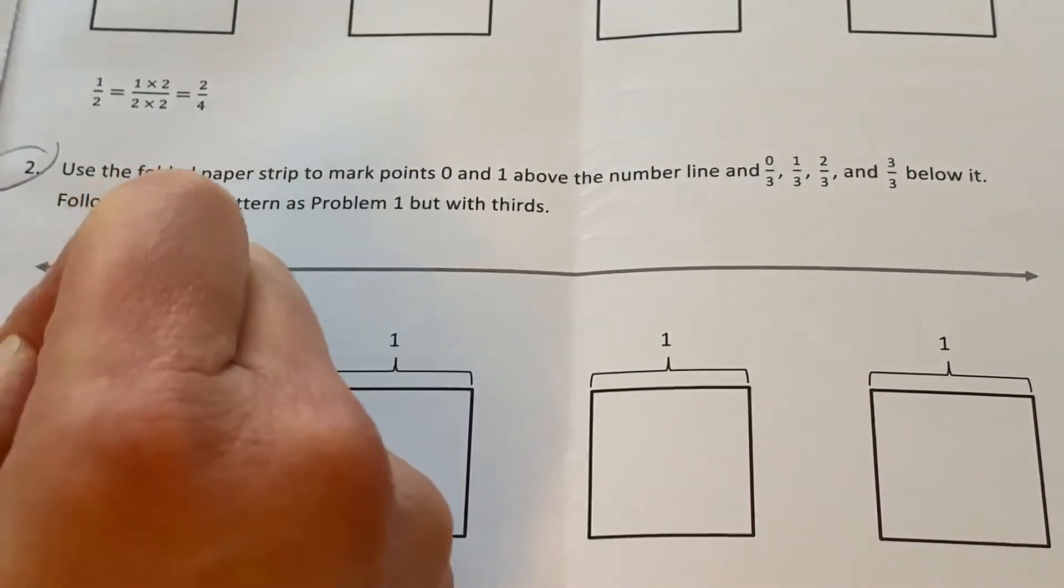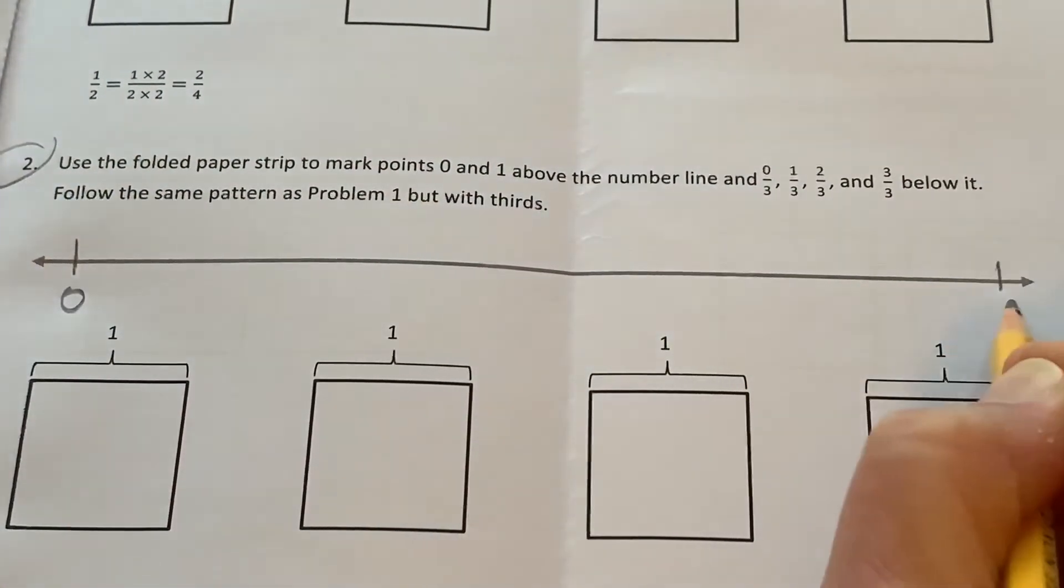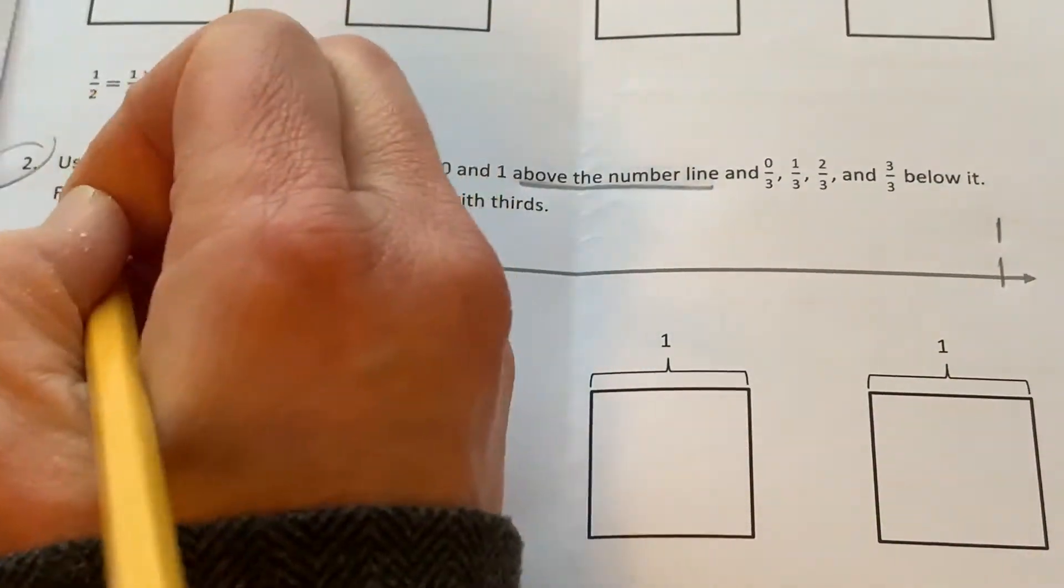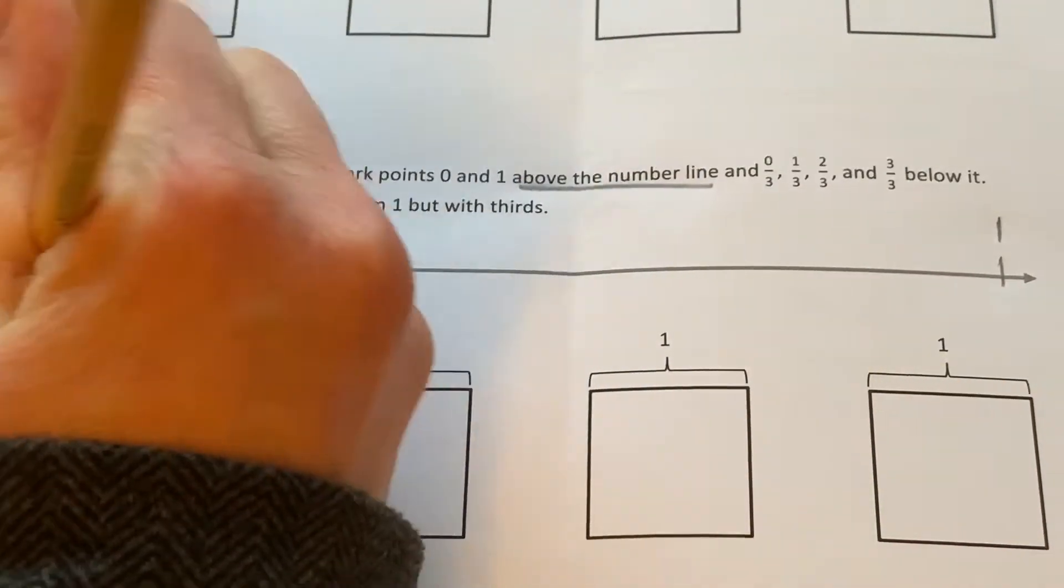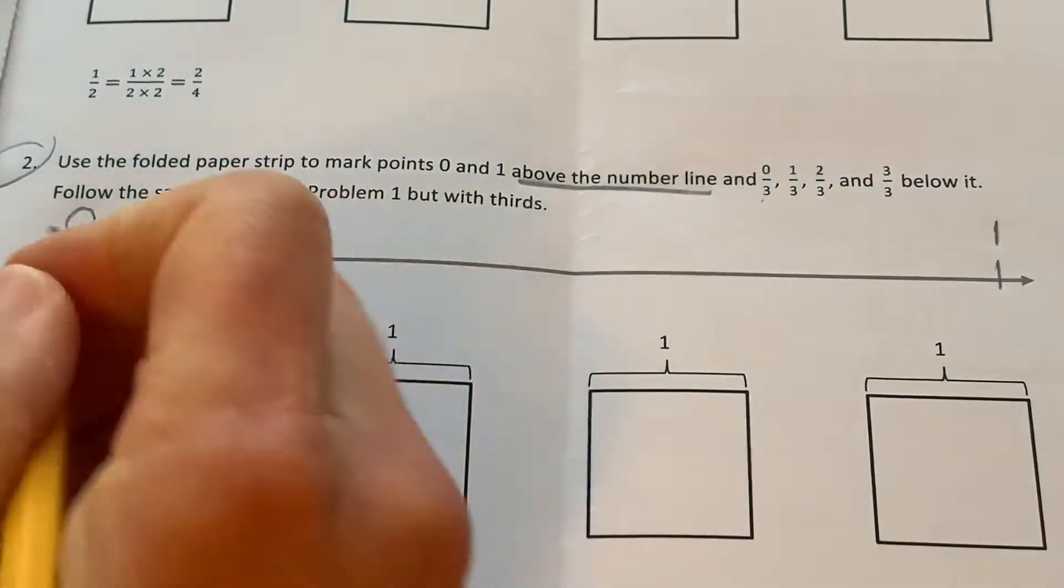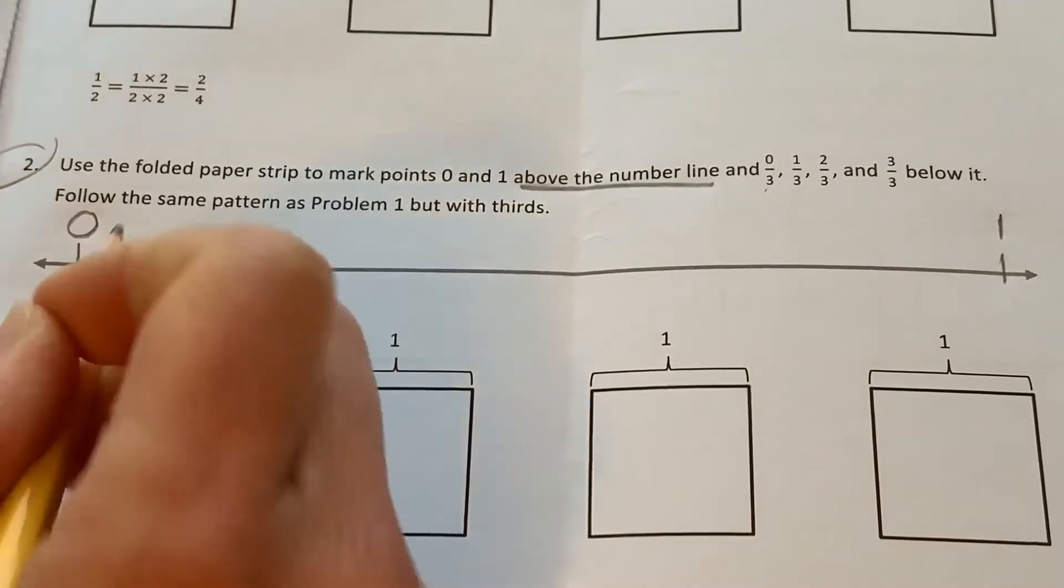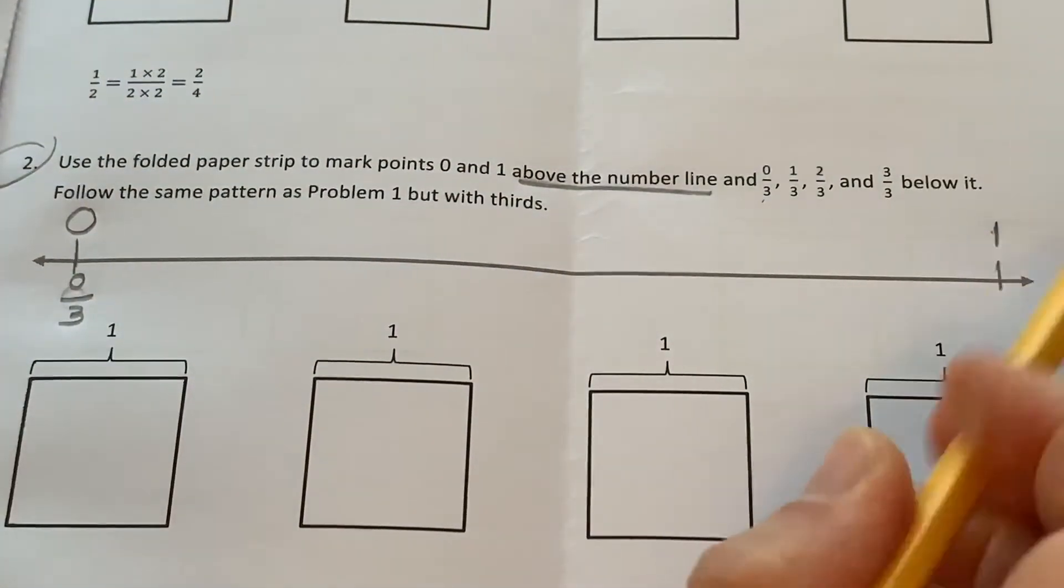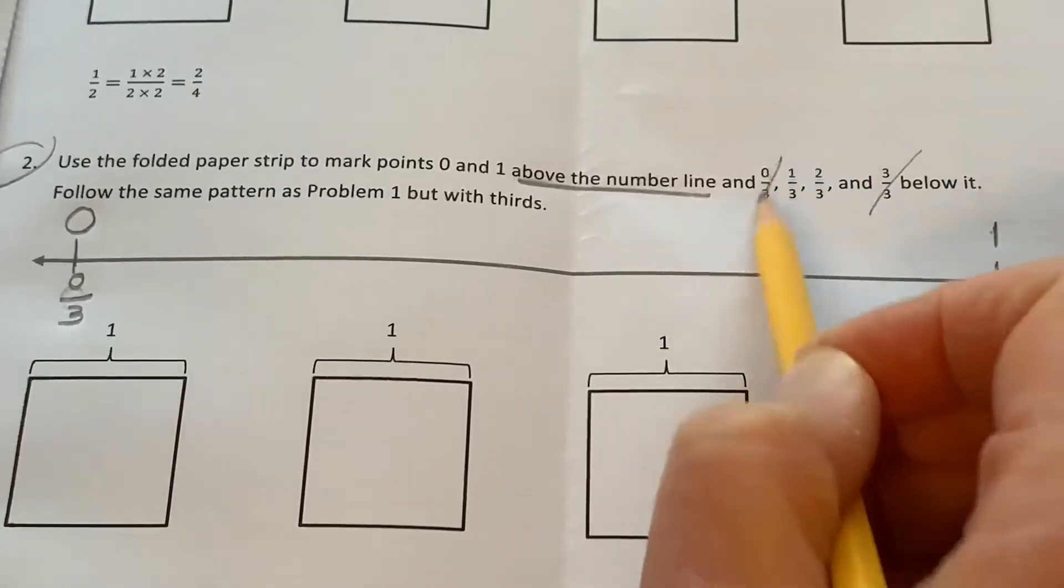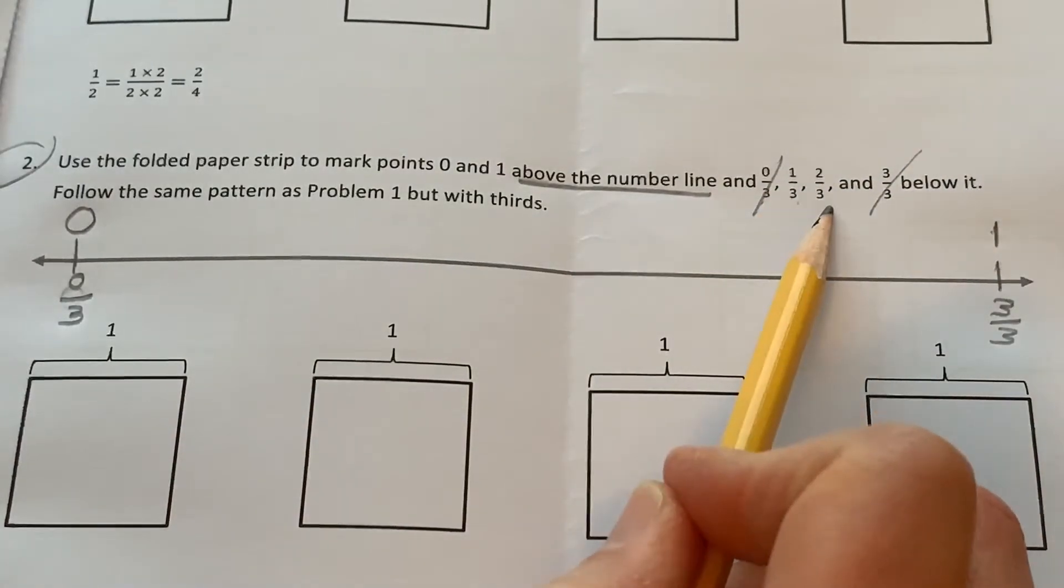Okay, so I'm going to mark this side 0, this side 1. Oops, it wanted me to do it above the number line, I forgot. Put the 0 up here. And then below, I'm going to add 0 thirds right here, 0 thirds. I know that 1 is equal to 3 over 3. Okay, so now I use that one and I use this one. And now I need to mark 1 third and 2 thirds.